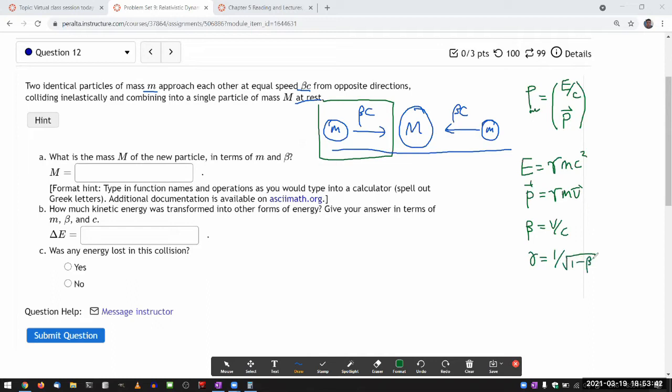In terms of beta, gamma is equal to one over square root of one minus beta squared. And because it's sometimes convenient, beta can be expressed in terms of gamma by inverting this relationship: square root of one minus one over gamma squared.